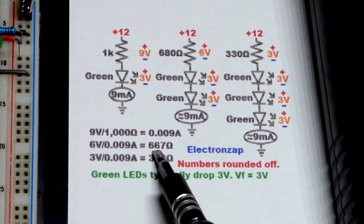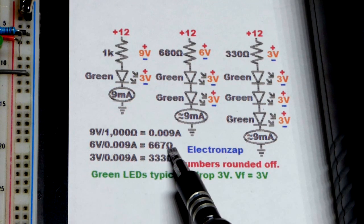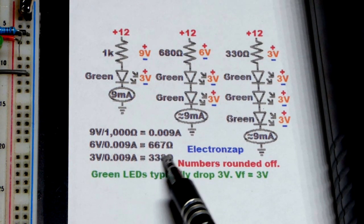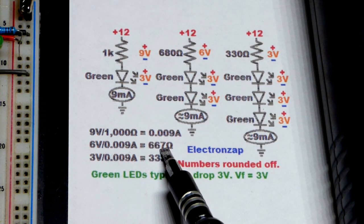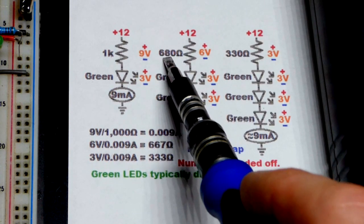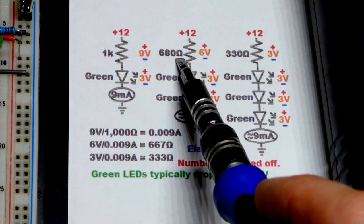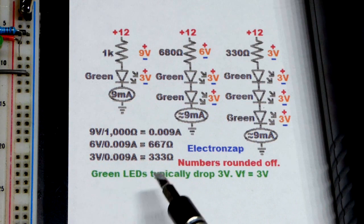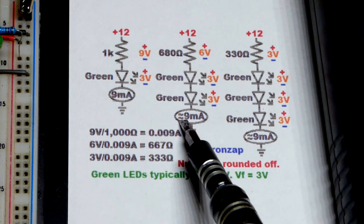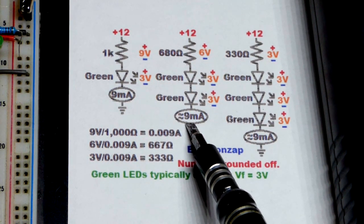So I did the calculation. We should use a 666.66 forever ohm resistor, but I just rounded it to 667. My closest value I have is 680. So really not that far off. And so we should have got really close to 9 milliamps of current.